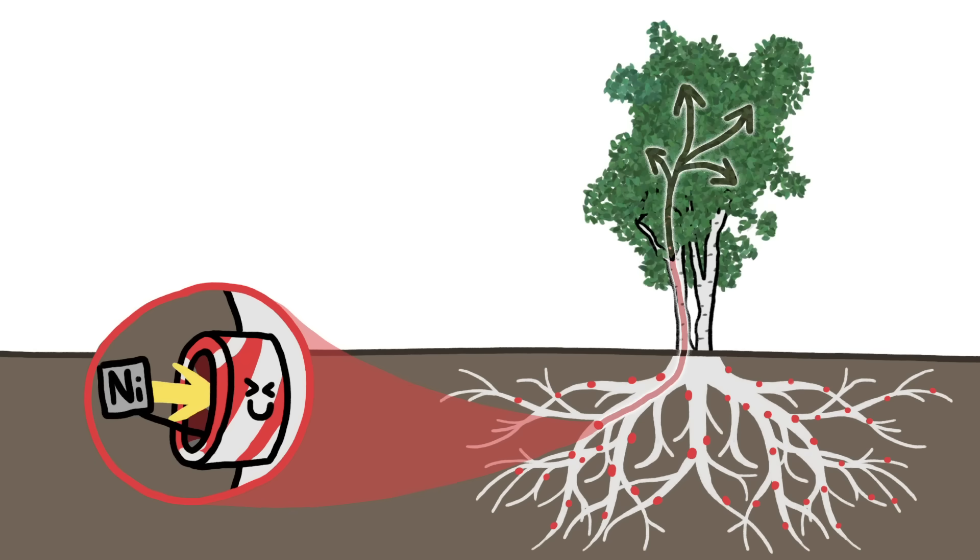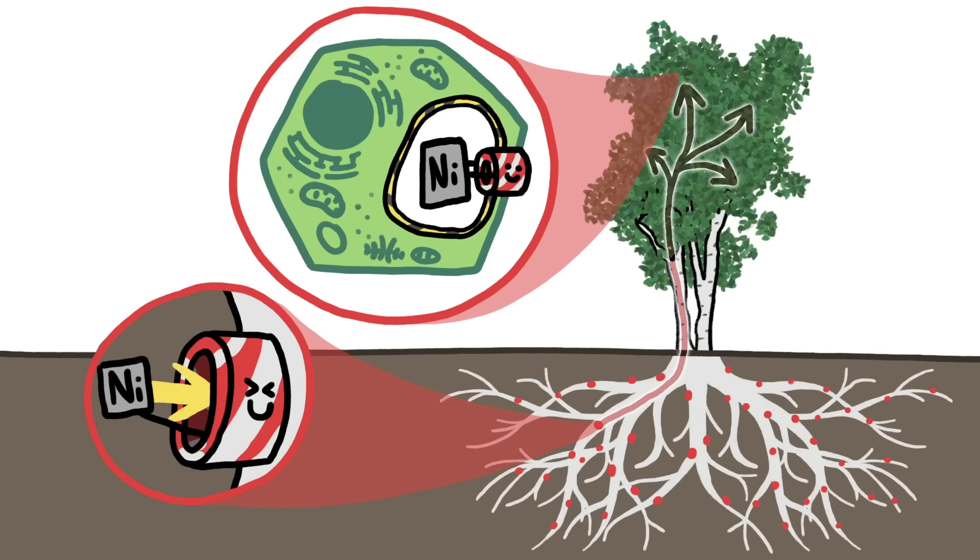Similar proteins transport the metal up into the leaves and trap it in cordoned off-pockets within leaf cells, helping the plant wondrously evade death.